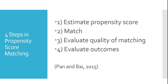Here are the four steps outlined by Pan and Bai that are used in the process of propensity score matching. First, we estimate the propensity score, where the propensity score can be thought of as simply a likelihood or probability that an individual unit experiences the treatment. For example, if we were trying to establish the effects of attending preschool, we would first estimate the likelihood that an individual in our data attended preschool. Once we have those scores in hand, we go to step two, which is to match. Using the propensity scores, we try to match up individuals who had a similar propensity or probability of attending preschool, so that we can have a more convincing comparison group.